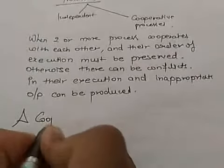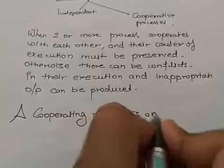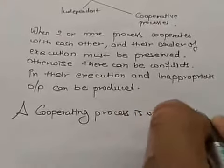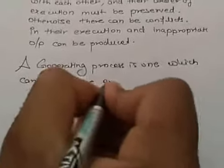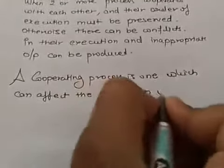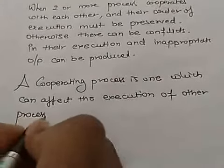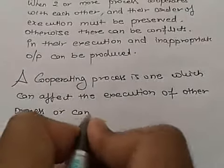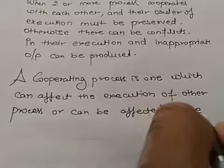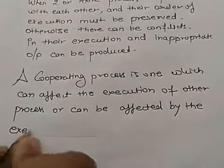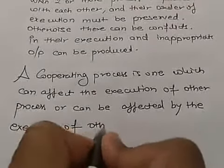A cooperating process is one which can affect the execution of other processes or can be affected by the execution of other processes.